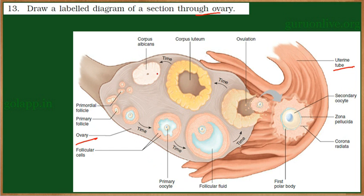Within the ovary there are follicles of different stages. These follicles are primary follicles. Under the influence of hormones like follicle-stimulating hormone and luteinizing hormone, these follicles will grow. They contain a primary oocyte which undergoes cell division, giving rise to a secondary oocyte, and then completes division giving rise to the ovum. The outermost cells, slightly brown in color, are the follicular cells, and inside that the single cell is the primary oocyte.